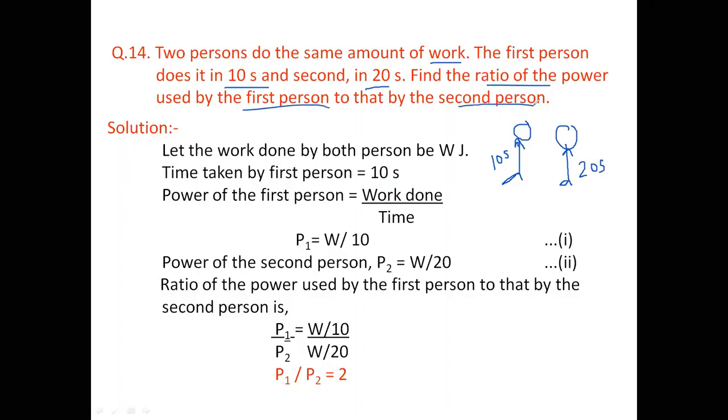The work done by both persons is W joule. Time taken by the first person is 10 seconds. The power of the first person is work done by time taken. So P1 is equal to W by 10. We know the formula, power is equal to work done by time.